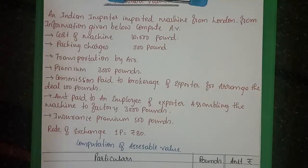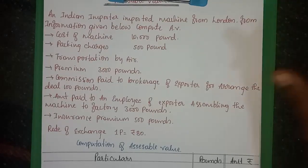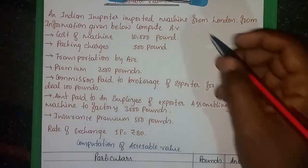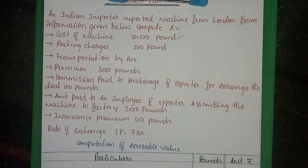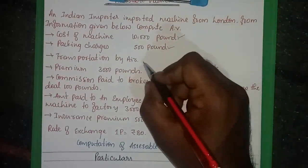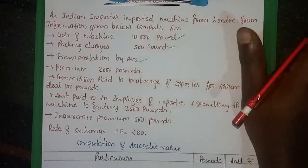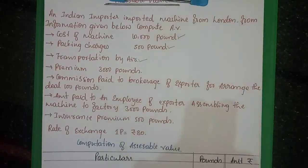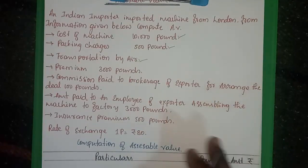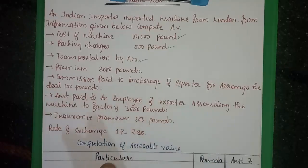An Indian importer imported a machine from London. The cost of the machine is 10,000 pounds. Consider packing charges and transportation charges by air. The format is explained in the description link — the key amounts are to be calculated.